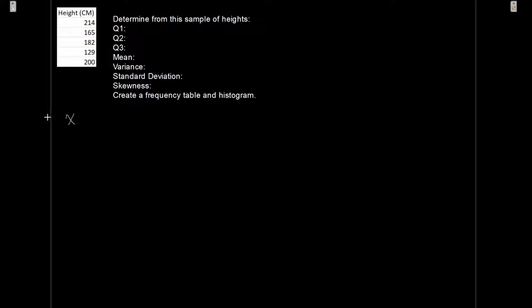So I have my x, I'm going to have my observation number, and my x variable is height in centimeters. Now what's my smallest value? 129. My next one is 165, 182, 200, and finally 214. And then I have my observation number of 1, 2, 3, 4, and 5. I have 5 observations together.